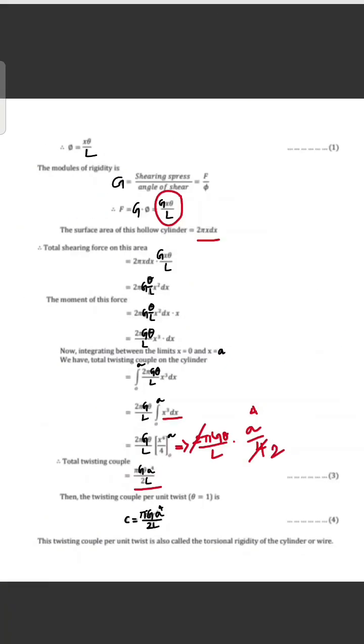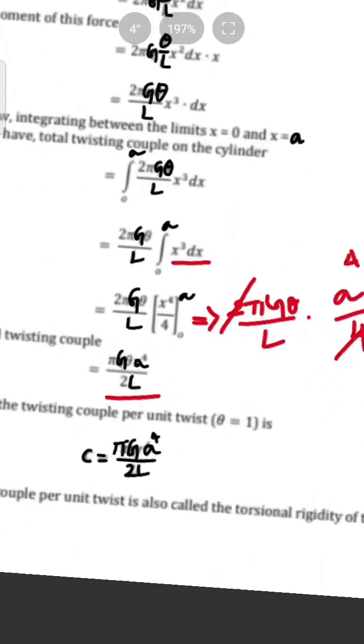The twisting couple per unit twist is obtained by setting theta equal to 1, giving C = pi·G·R⁴ / (2·L).